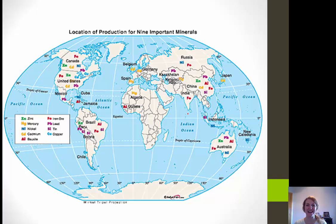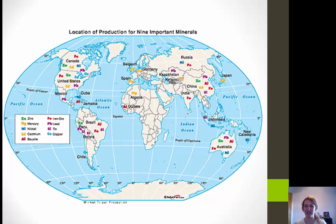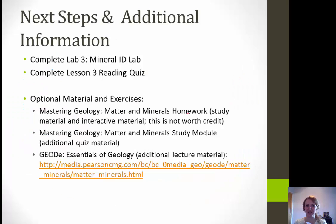We have a worldwide map showing the location of production for nine important minerals: zinc, mercury, nickel, cadmium, bauxite, iron ore, lead, tin, and copper — scattered throughout the world. For next steps: make sure you complete lab number three on mineral ID, complete your reading quiz, and if you want some optional exercises, those are available to help you better understand what you just learned about minerals and matter. Thank you.